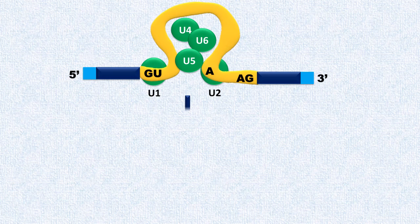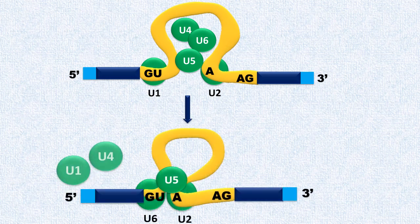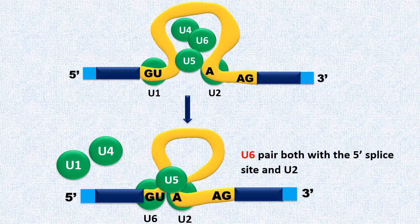In the third step, U1 and U4 are expelled. U6 is paired with both 5' splice site and U2.